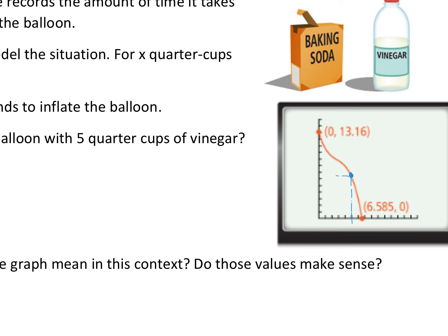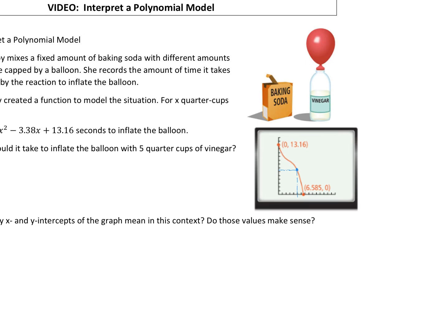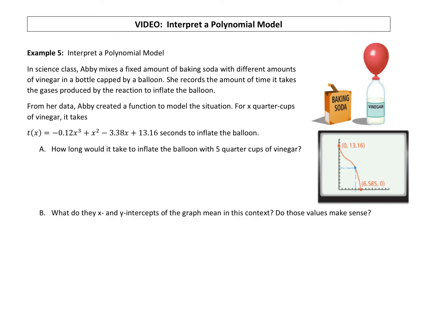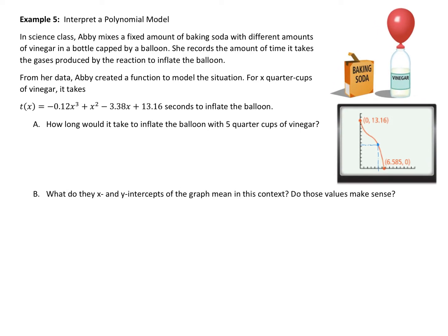Now I would sketch straight across to see what the y value is, or the value of the function. I'll estimate that to be 6.3. So when our x was equal to 5, the value of the function t(x), which is our y, was equal to about 6.3. So it will take about 6.3 seconds to inflate if Abby uses 5 of those quarter cups of vinegar.